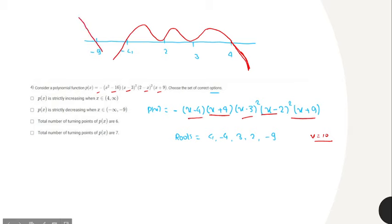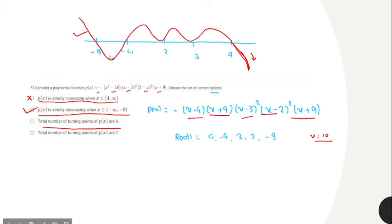Evaluating the options: p of x is strictly increasing from 4 to infinity — this is incorrect since it is decreasing there. p of x is strictly decreasing on some interval to the left — this is correct. The total number of turning points is 6, counted as 1, 2, 3, 4, 5, 6 — this is correct. The option giving a different number of turning points is incorrect.